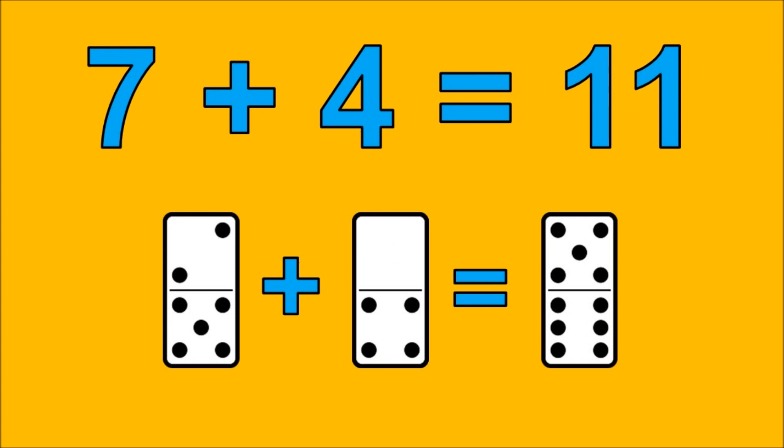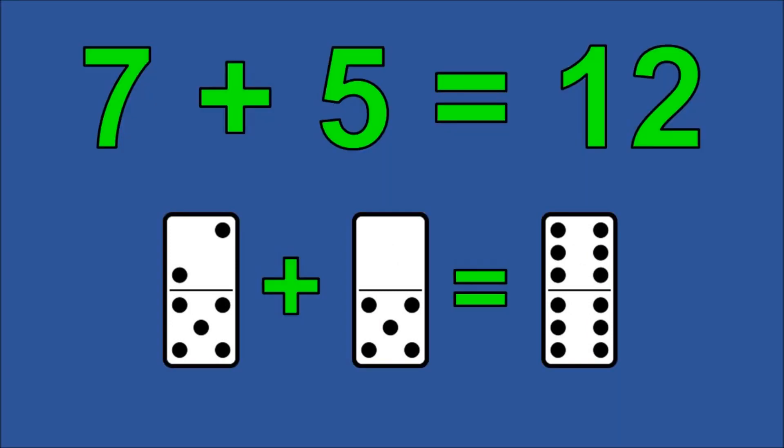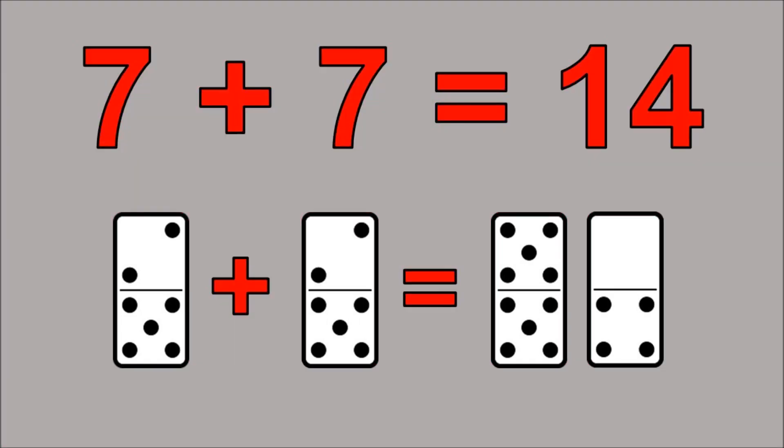7 plus 4 is 11, 7 plus 5 is 12, 7 plus 6 is 13, 7 plus 7 is 14.